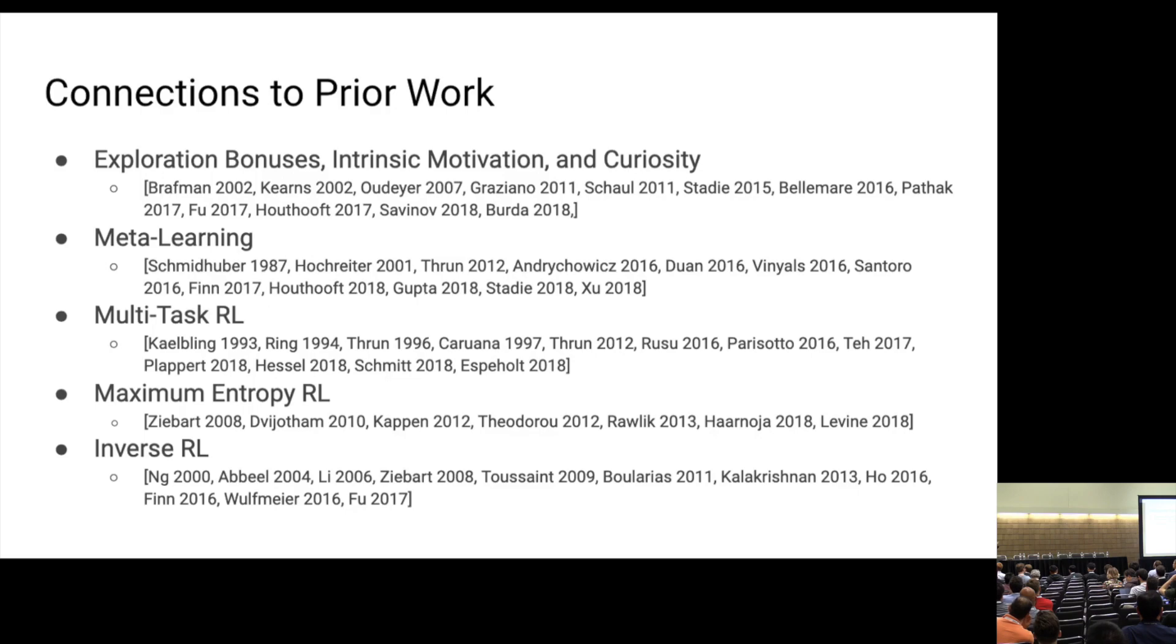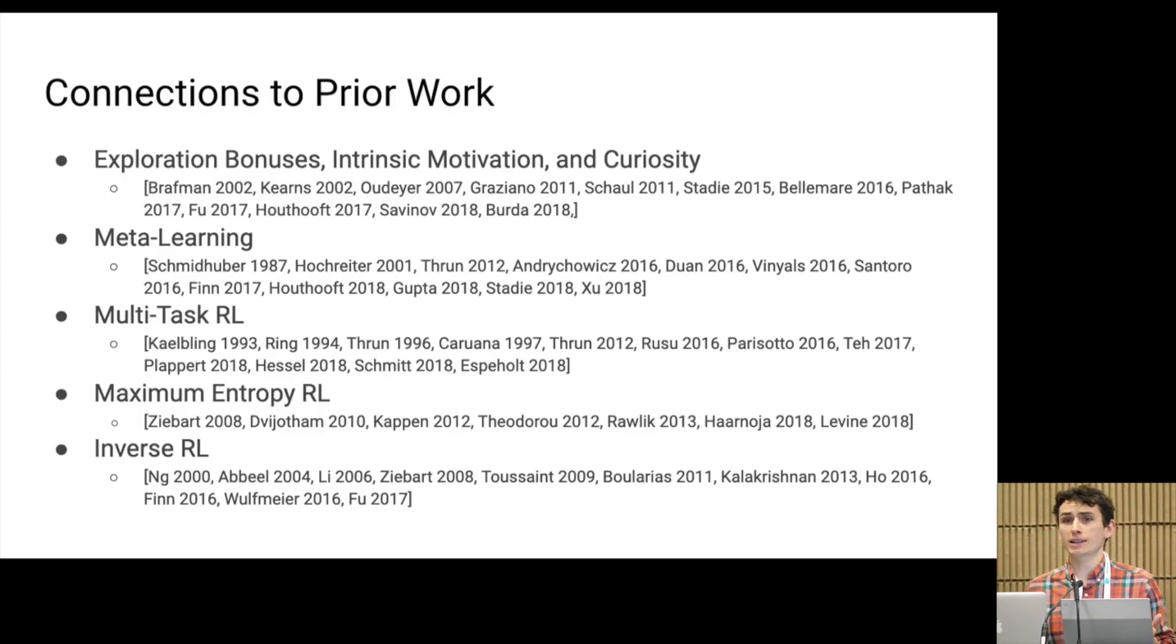Our project has strong ties to prior work in many related areas of reinforcement learning. First, there's been considerable work on both exploration algorithms and algorithms for intrinsic motivation, both which result in good exploration during training. Second, state marginal matching makes sense in multi-task settings. We might want to learn a policy that can adapt quickly to multiple downstream tasks. There's likewise been a lot of work in this setting. Our experiments are going to focus on both the exploration and this multi-task meta learning aspect of state marginal matching. Finally, it's worth noting that the idea of matching distributions with reinforcement learning is not new and has been explored in both maximum entropy reinforcement learning and inverse reinforcement learning.